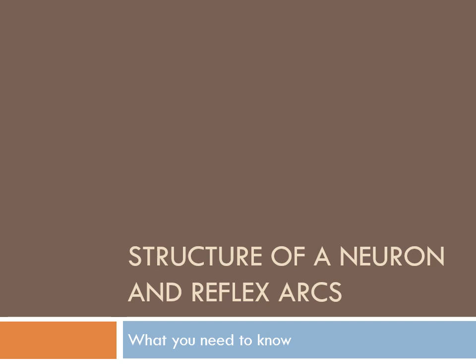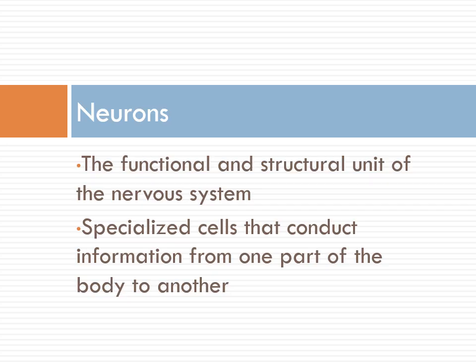This presentation is about the structure of a neuron, and once you understand the structure of the neuron you can see how a couple neurons interact with each other for a reflex arc. Neurons are the basic units of structure and function for the whole nervous system. They're the cells that make up the nervous tissue, and the nervous tissue makes up the nerves and the brain. Neurons are specialized cells that conduct information from one part of the body to another.